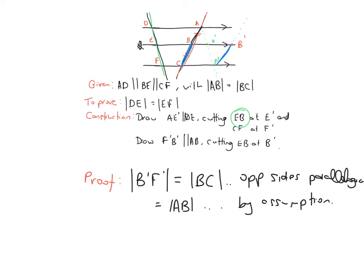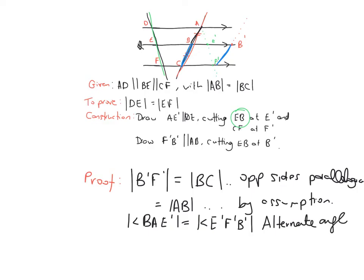Next we look at our angles. The angle BAE' equals the angle E'F'B', and the reason is that these are alternate angles — also known as Z angles. We can mark these on the drawing: angle BAE' is at point A and angle E'F'B' is at point F'.